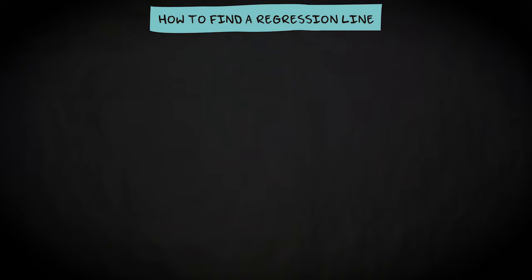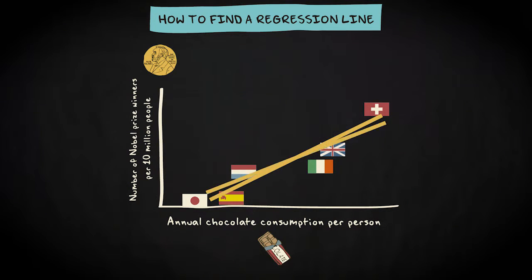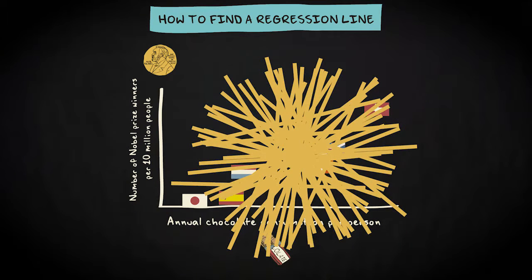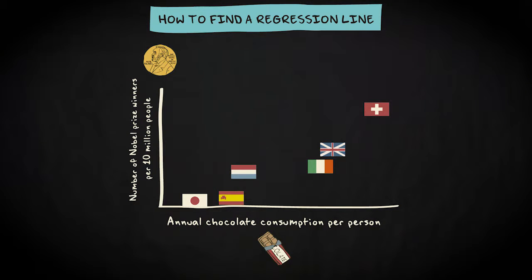So how do we find the regression line? Imagine that you draw every possible straight line through the scatterplot — this one, this one, this one, and every other possible line. That's a huge number of lines, so in practice it will be almost impossible to do. However, for now imagine that you have superhuman powers and that you are able to do it.